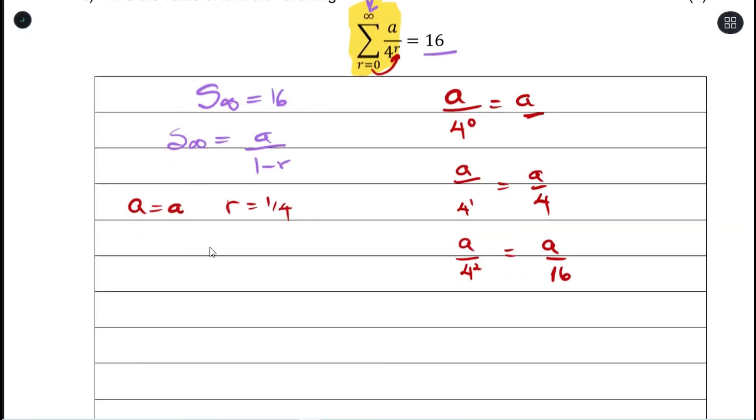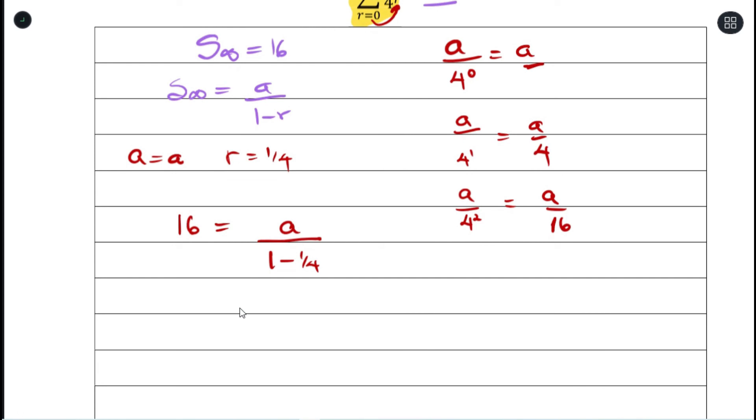Sum to infinity is 16, which equals a over 1 minus 1 over 4. Simplifying this, 16 times 3 over 4 equals a.